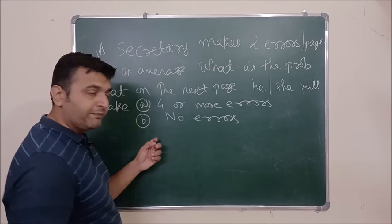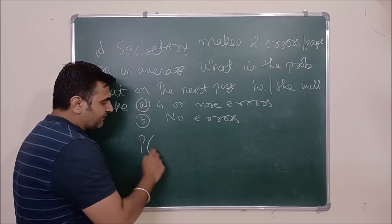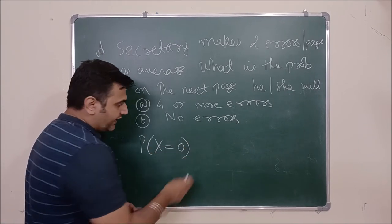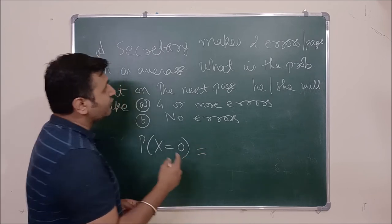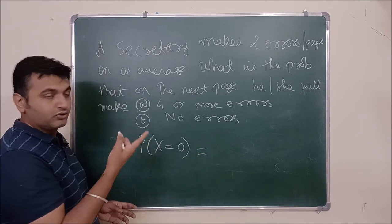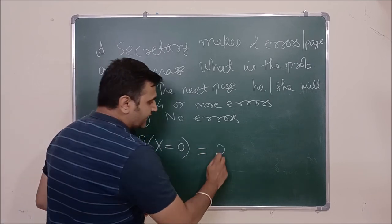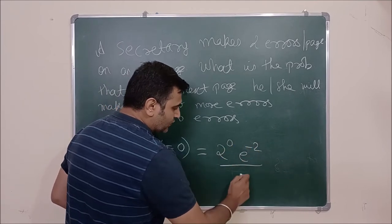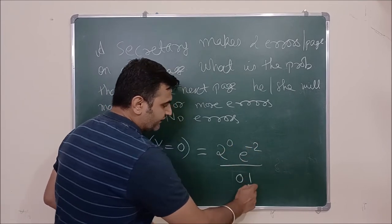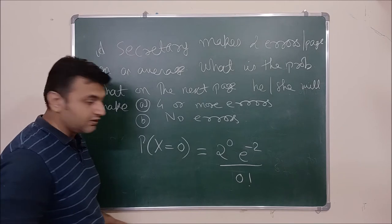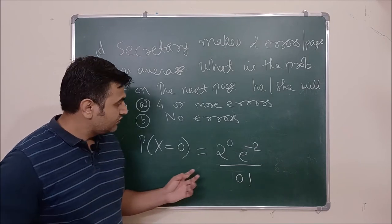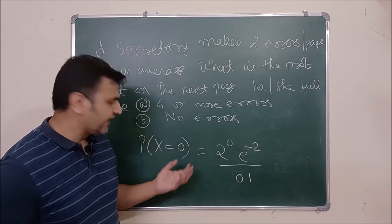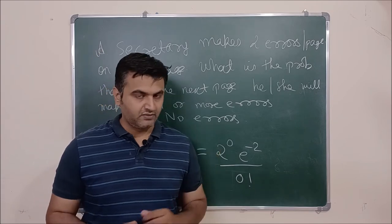For part B — the probability of no errors — that means probability that X equals 0, so K equals 0 and lambda equals 2. Using the formula: 2 raised to 0, times e raised to minus 2, divided by 0 factorial. Since 0 factorial is 1, you can directly compute the answer.